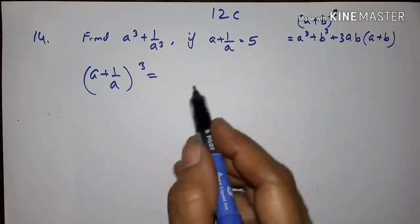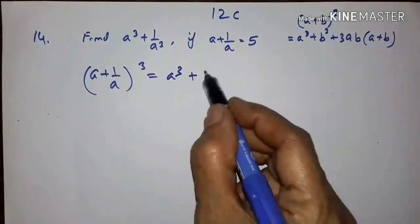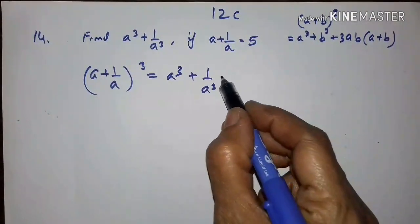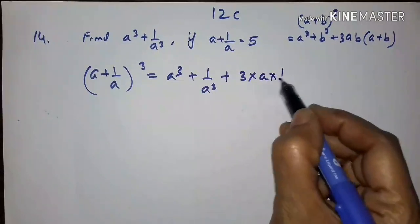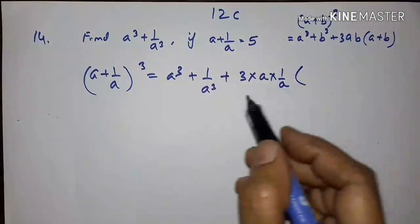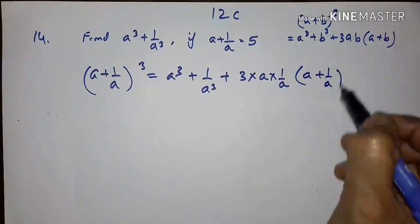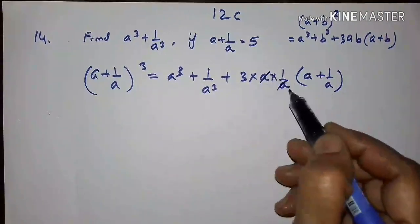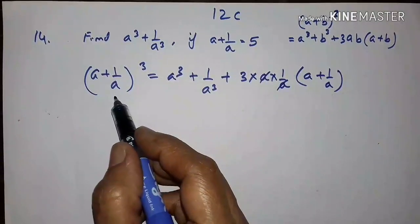Expanding: a plus 1 upon a, the whole cube, equals a cubed plus 1 upon a cubed plus 3 into a into 1 upon a into (a plus 1 upon a). Since a and 1 upon a cancel, we simplify. Now let us substitute the value.